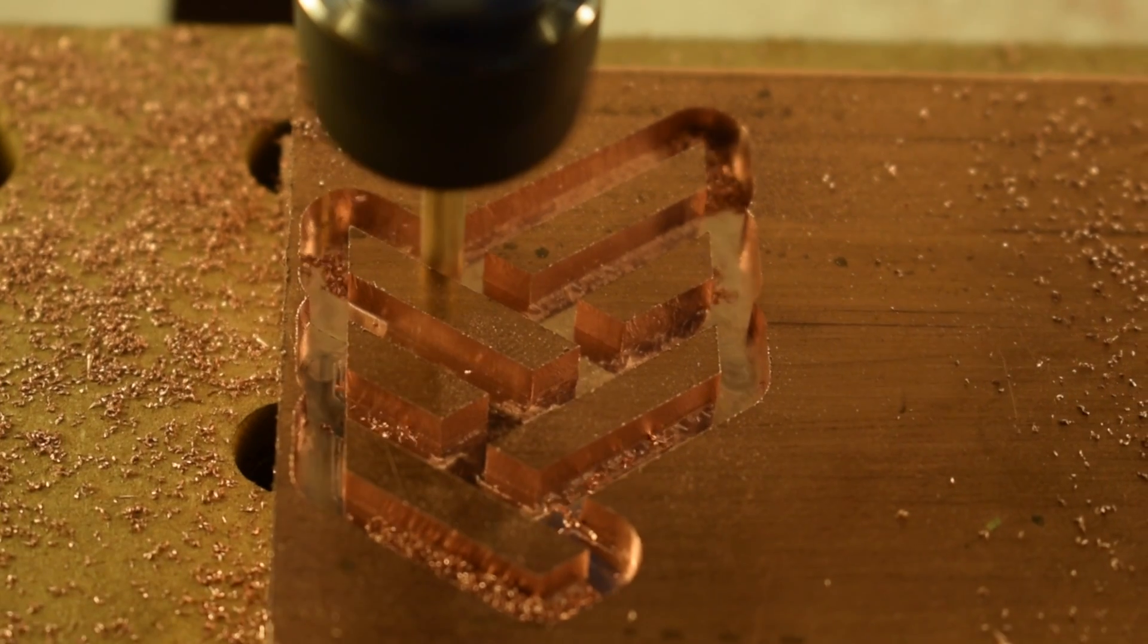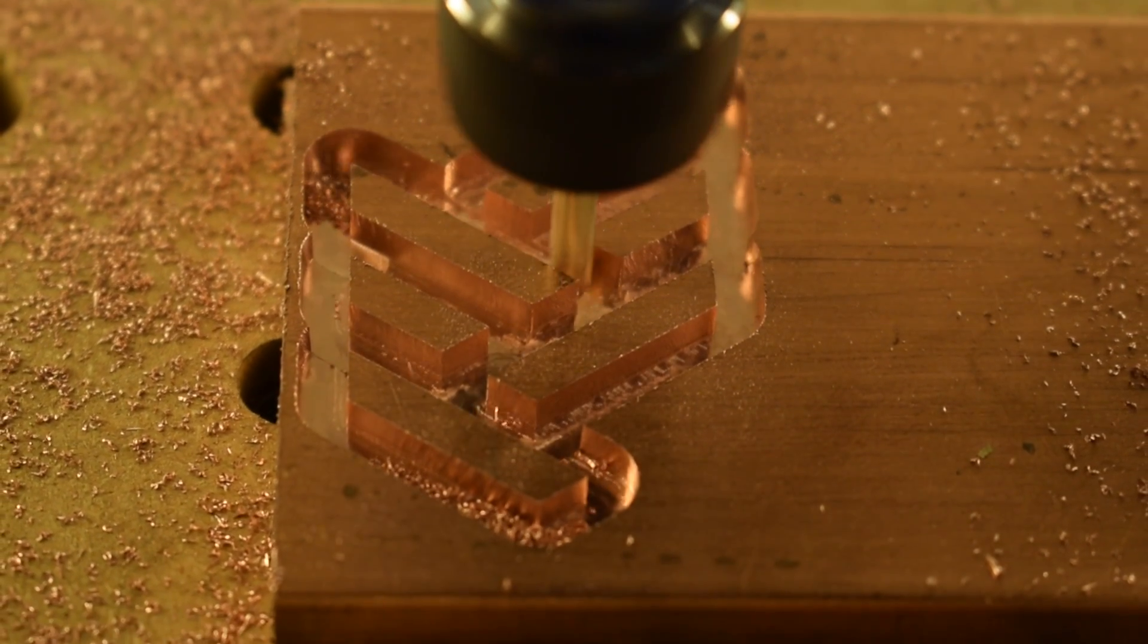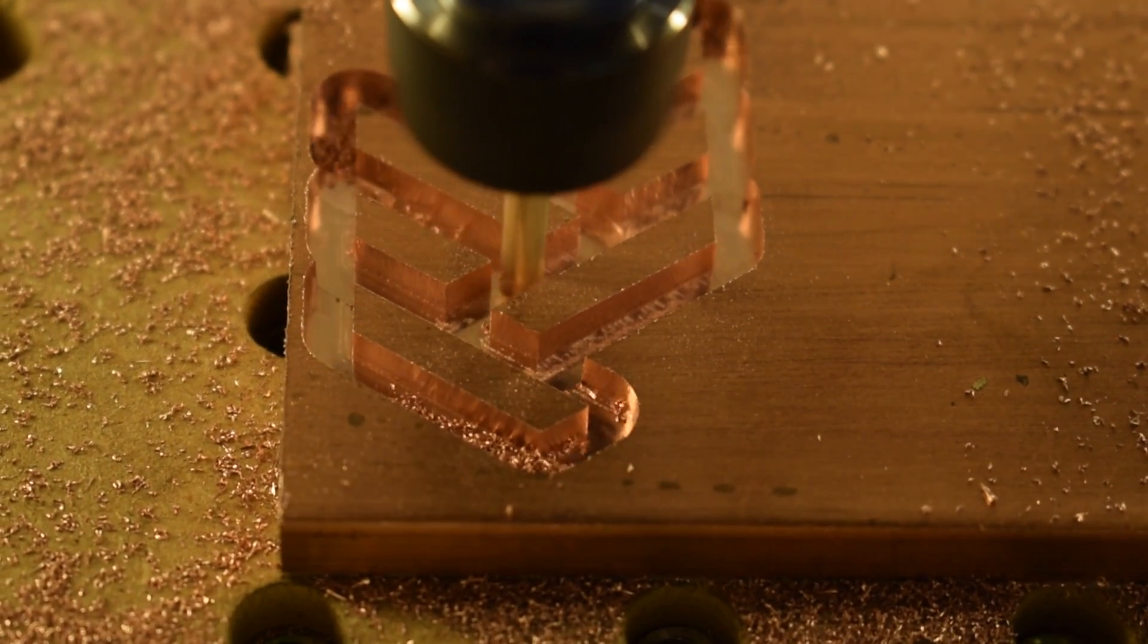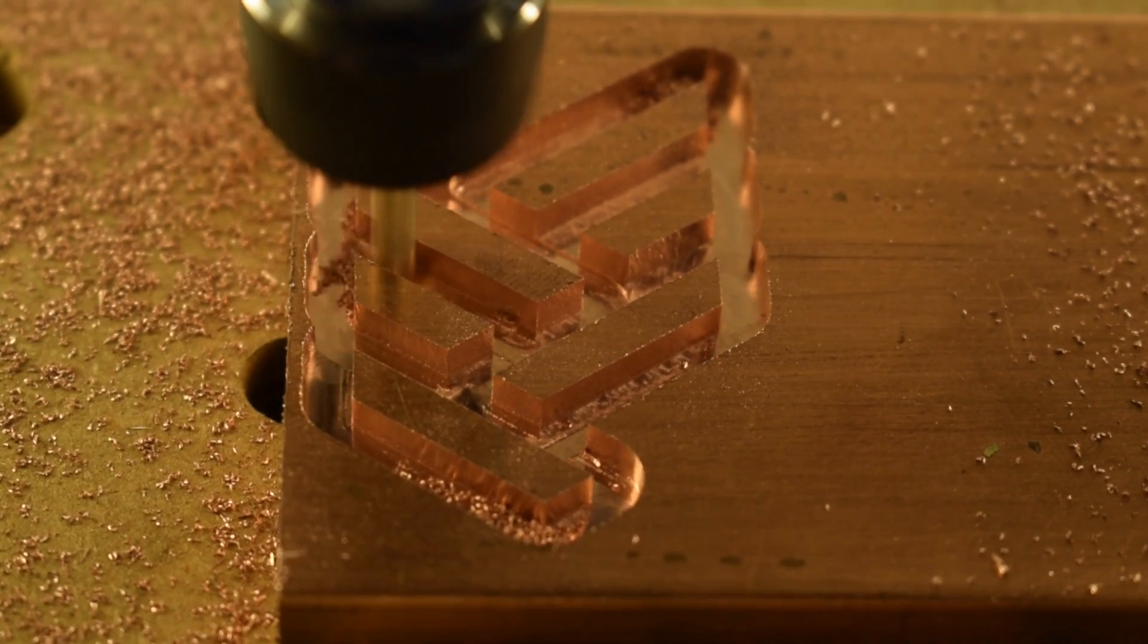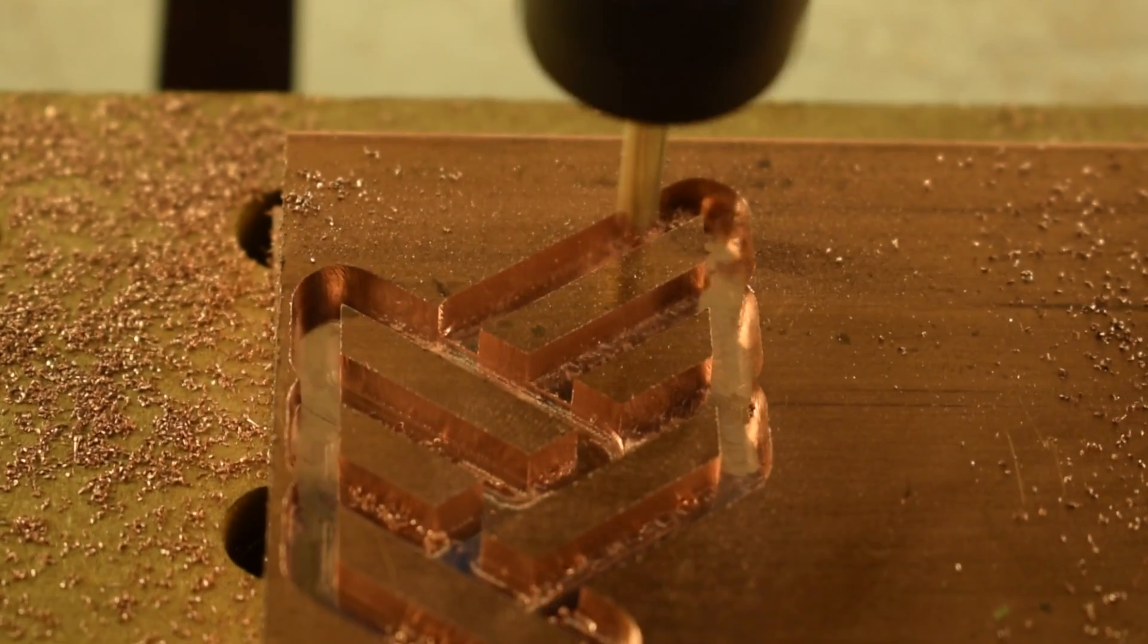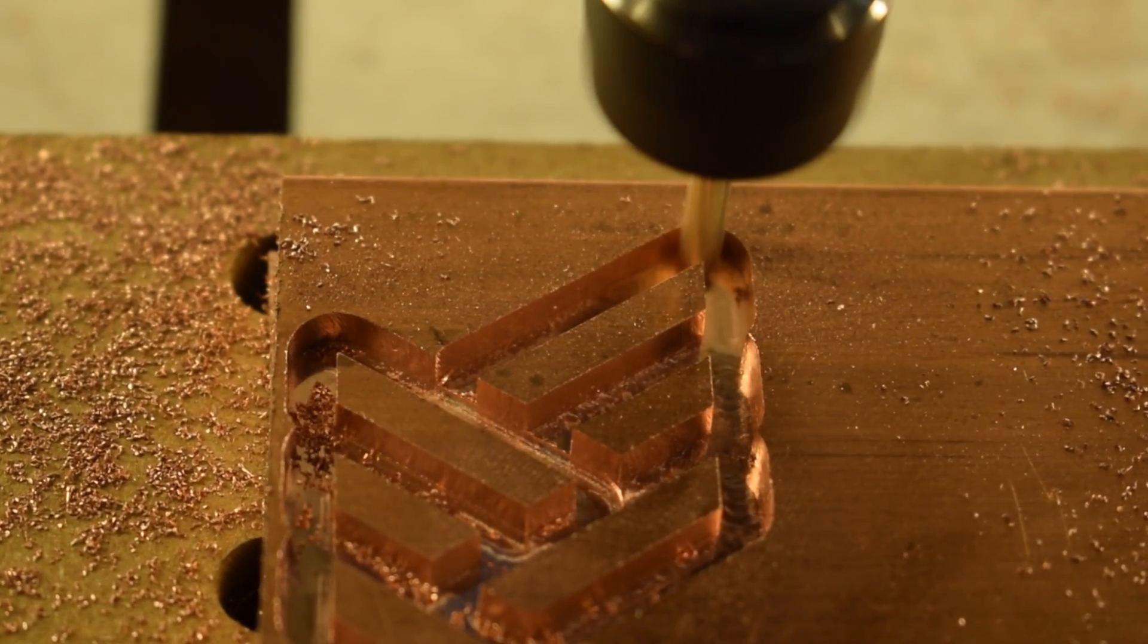You can choose to go shallower and faster, but I would not go deeper and slower because that will cause more friction and heat as you decrease chip load. For this example, I'm leaving a couple thou of radial stock to leave so I can clean up the walls later.